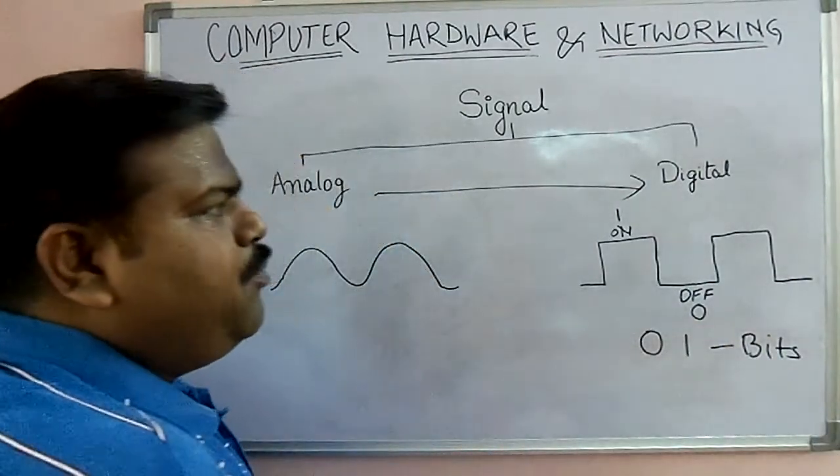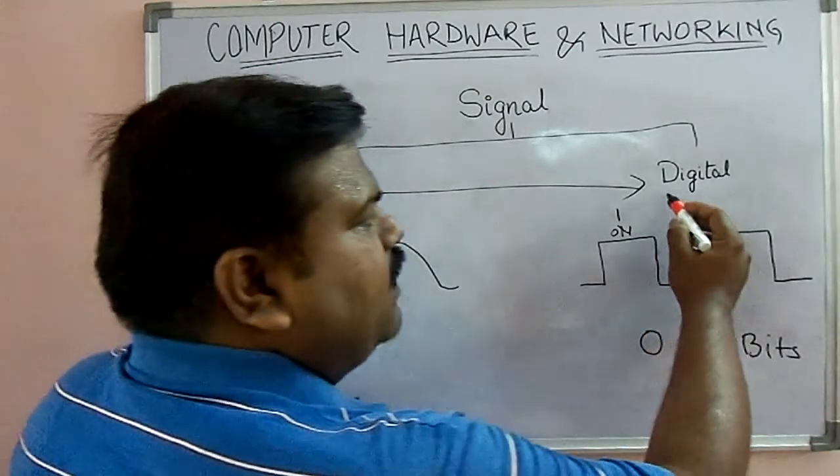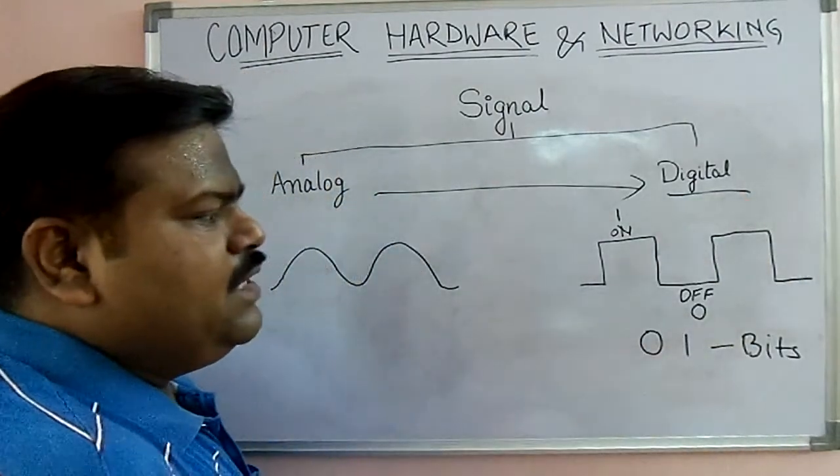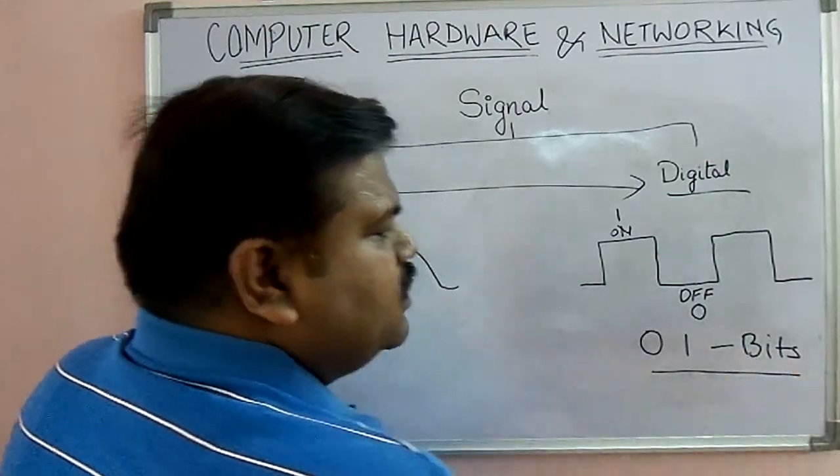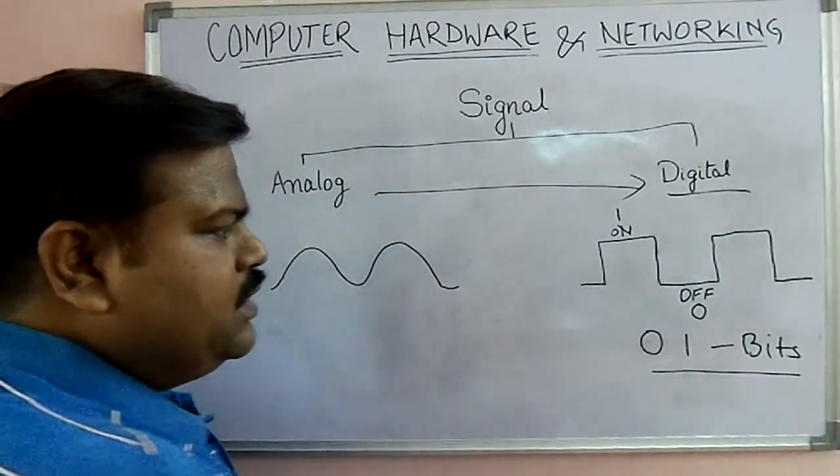0 and 1, these are bits. So our computer is a digital device. Computer is a digital device, it understands only 0 and 1s. This is bits.